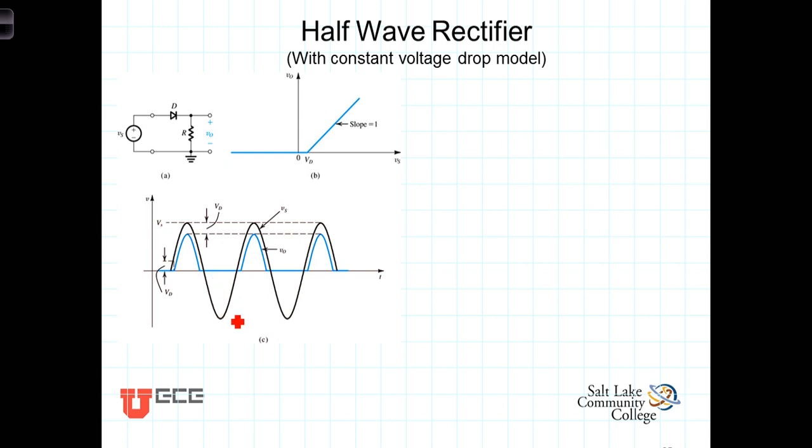When the input goes negative, the diode will be reverse biased. It will not conduct. There will be no current going through the resistor and there will be no voltage at the output.